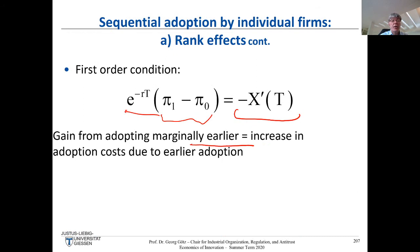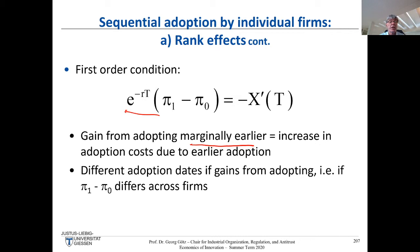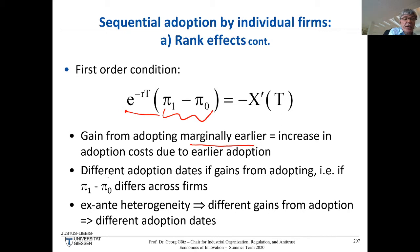So now it should be clear what the trade-offs are when buying your next computer. Obviously, if different firms have different gains from adoption, they will adopt at different dates — they choose different points on the adoption cost curve where the slope matches their profit gain. This ex-ante heterogeneity leads to different adoption dates. This is the so-called rank effects model, explaining from first principles of profit maximization why different firms adopt at different dates.